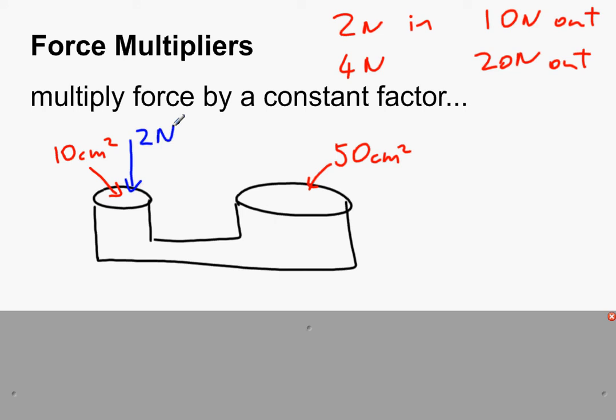Which is force over area, so two newtons over 10 centimeters squared, which gives us a pressure of 0.2 newtons per centimeter squared. You'll know that the pressure is the same throughout the whole hydraulic system.